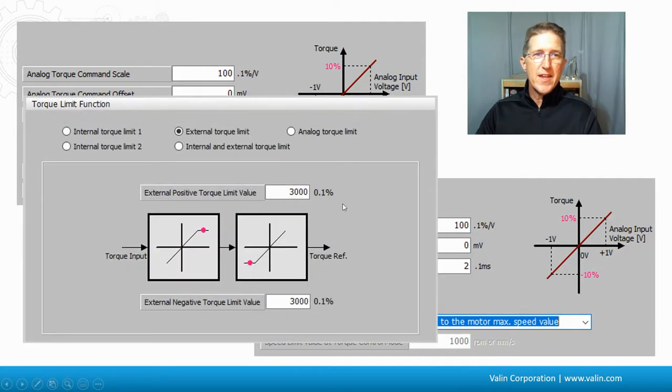And then on the next screen, this has an external torque limit. In this case, it's set to 3,000 times this 0.1%. So it's set to 300%, which is three times the continuous current or continuous torque. But perhaps somebody has set that lower, or perhaps the version of software is set that to a lower value.